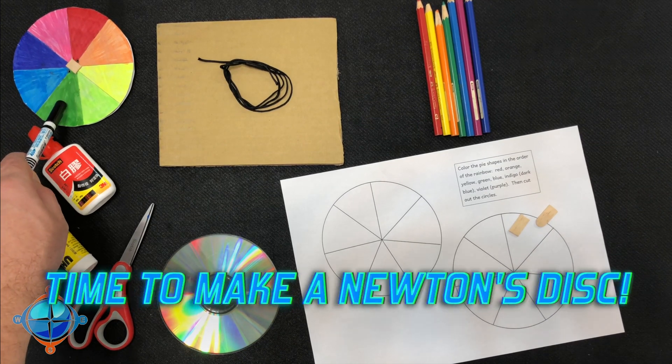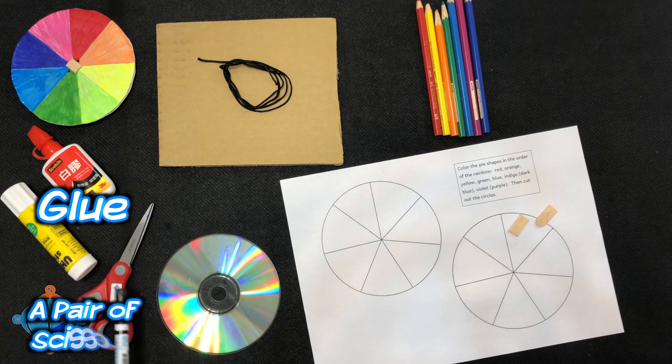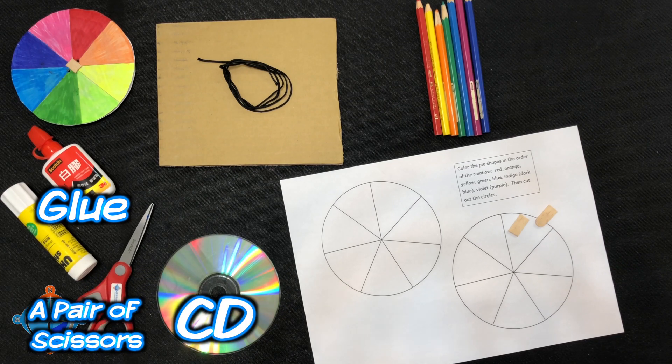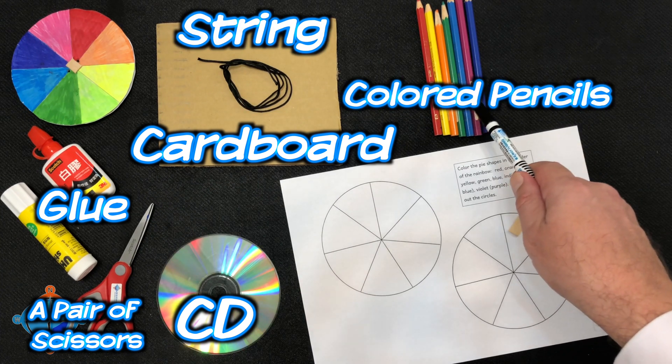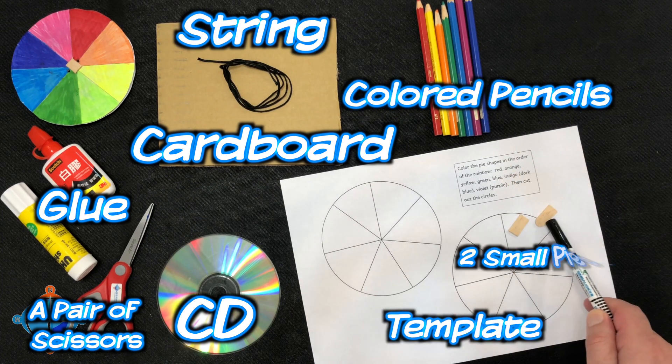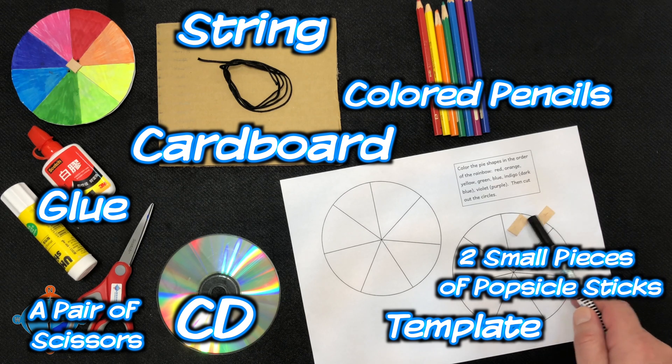Okay, so to make your Newton's Disc, you will need glue, pair of scissors, the CD, cardboard, string, colored pencils, a template, and two small pieces of popsicle sticks.